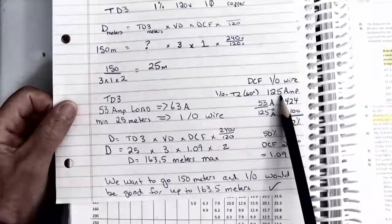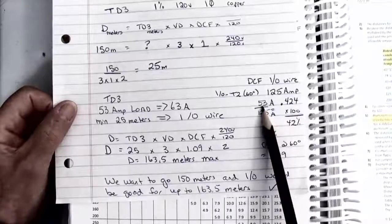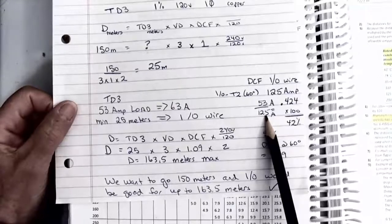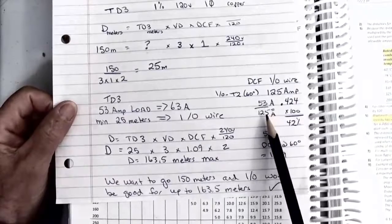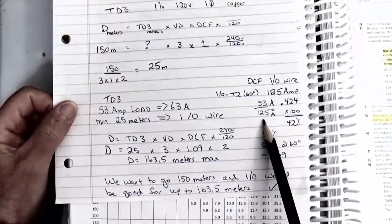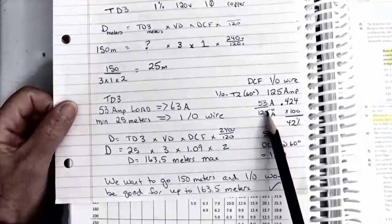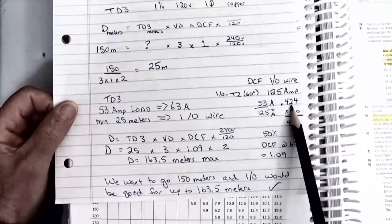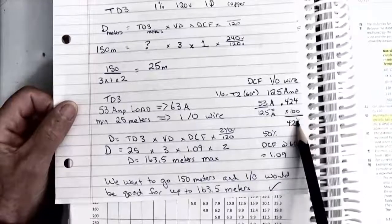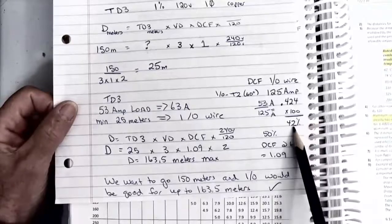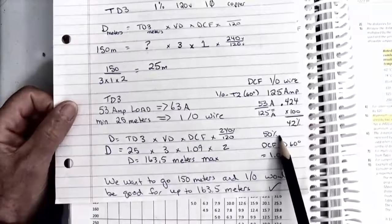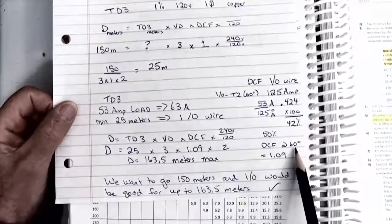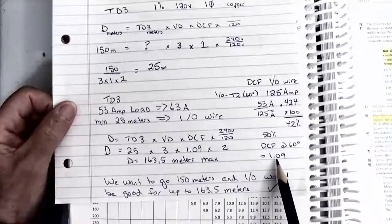In Table 2 I find that a 1/0 wire at 60 degrees is good for 125 amps. My load was 53 amps and the wire is rated for 125 amps — a huge difference. We only need 53 amps running to the load, but we're using a larger conductor to reduce voltage drop and lower resistance. The percentage of the wire's capacity actually being used by the load is 42.4%. Since we must round up and cannot round down, I go to the DCF table and look for 50% usage at 60 degrees, and find that my actual DCF is 1.09.